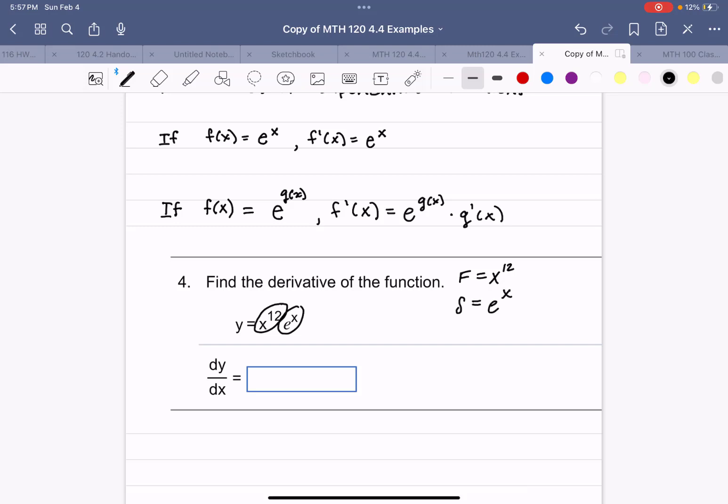And remember our product rule says that y prime is the first times the derivative of the second plus the second times the derivative of the first. Well, the derivative of our first function here would be 12x to the 11th. Derivative of our second function here would be e to the x.